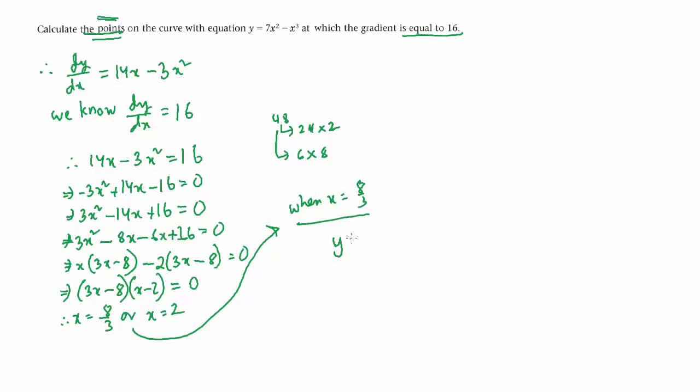This is the equation. y = 7(8/3)² - (8/3)³. This is going to give us a value.